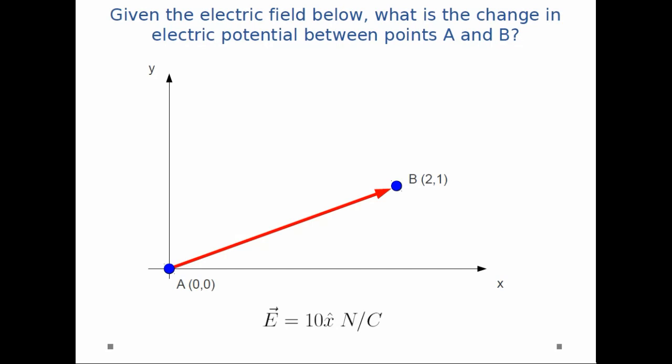In this case, we're taking a path from A to B. B is our final point, A is the initial point.